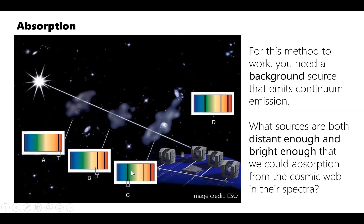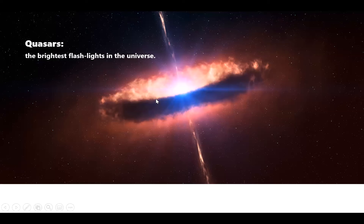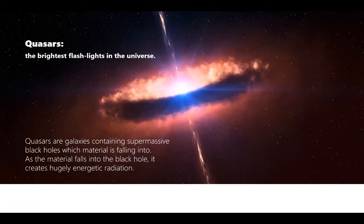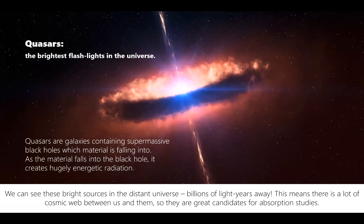If you look at a distant enough source with cosmic web between you and it, you can see absorption lines showing where the cosmic gas absorbed some of its emission. Quasars provide the best opportunity — they're galaxies containing supermassive black holes that material is falling onto, emitting hugely energetic radiation. They're useful for two reasons: they're among the brightest objects in the universe, and we can see them billions of light years away, meaning there's a lot of cosmic web between us and them.